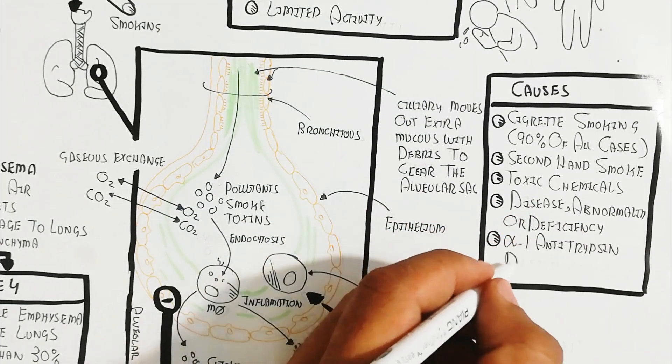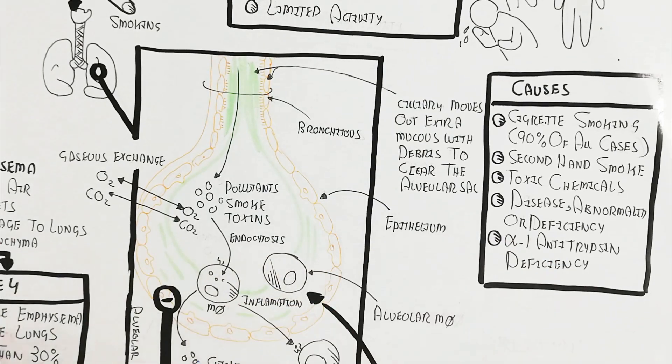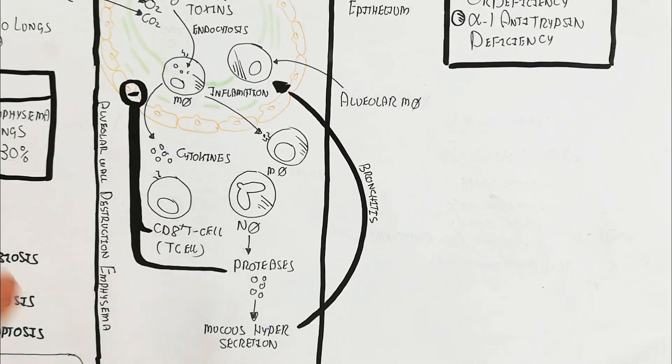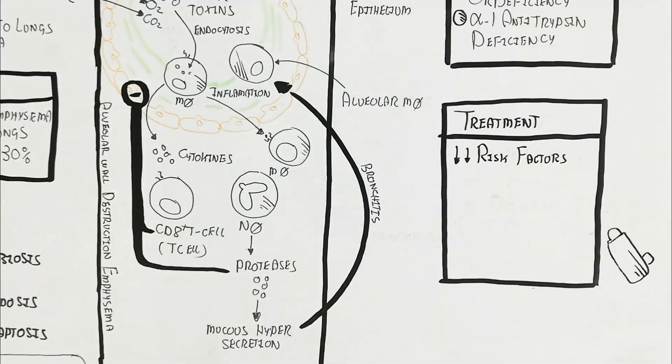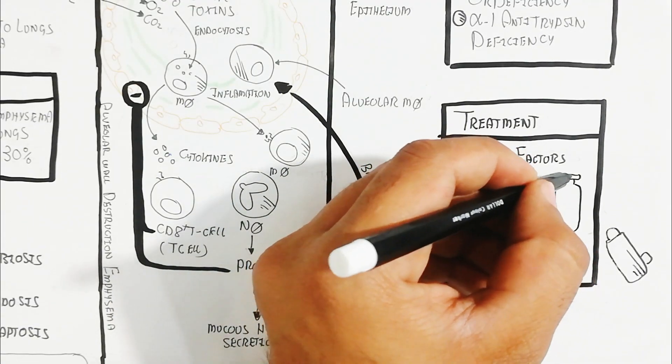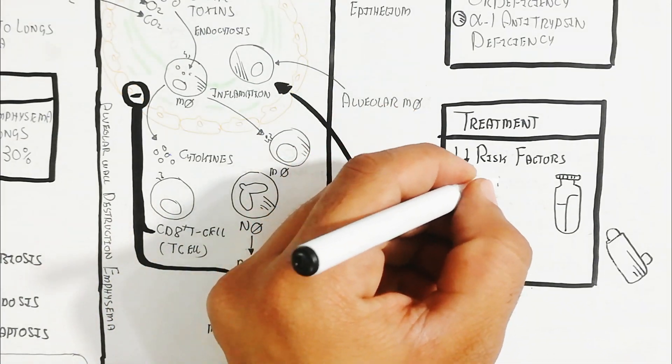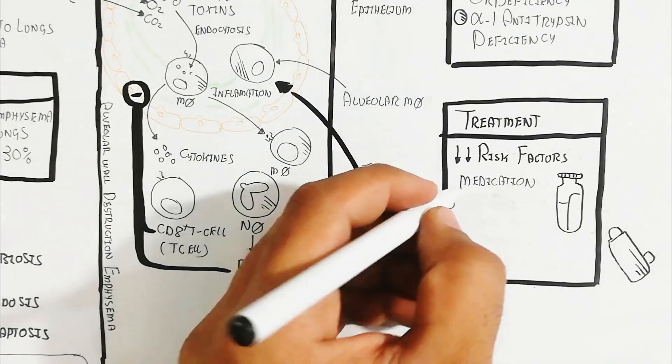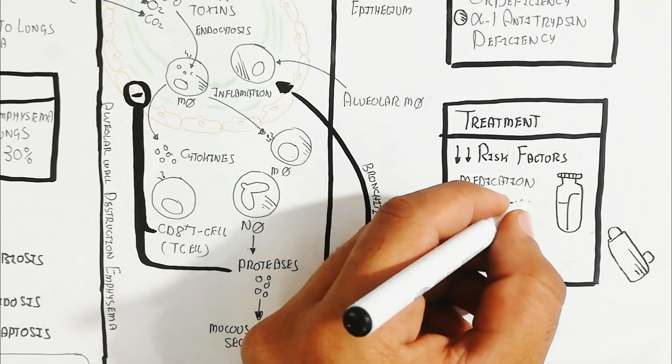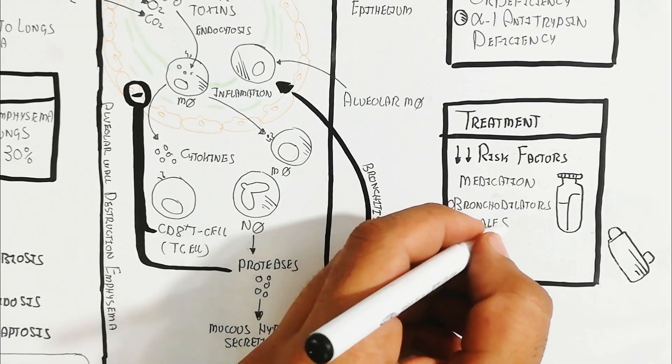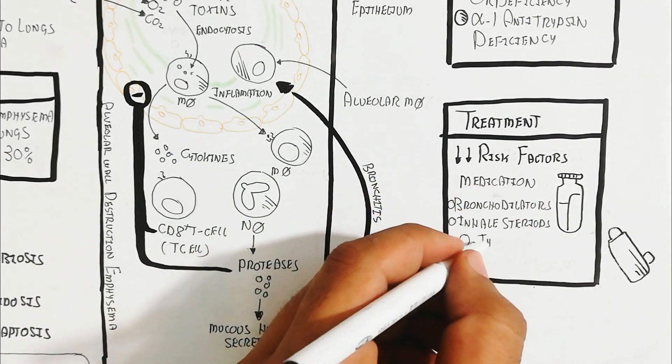Treatment focuses on decreasing risk factors. Medications include bronchodilators for bronchiole dilation to ease airflow, inhaled steroids, oxygen therapy, and pulmonary rehabilitation.